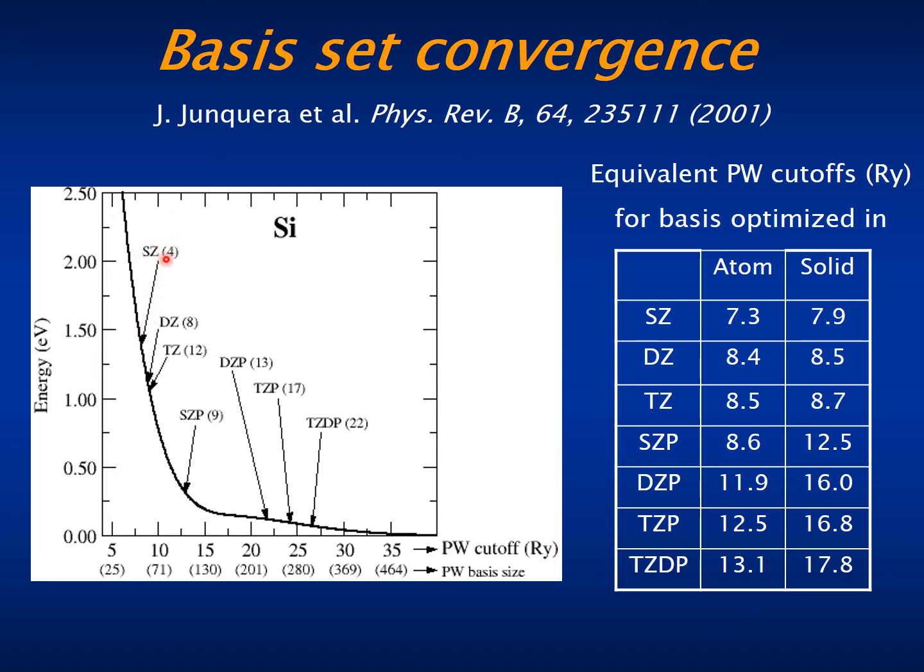So you can see that a single zeta basis with just four orbitals per atom is equivalent in energy convergence to a plane wave basis set with about 50 or more orbitals.